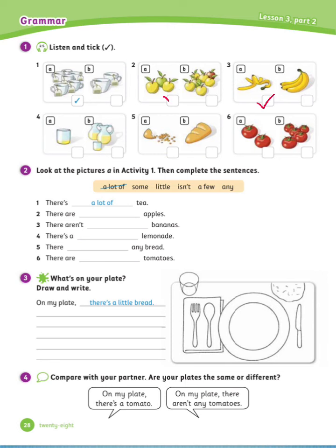Number 4: There is a little lemonade. Number 5: There is some bread. Number 6: There are a lot of tomatoes. Now check your answers.